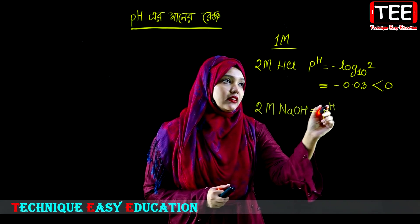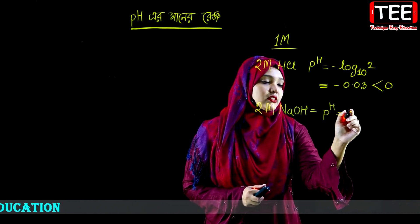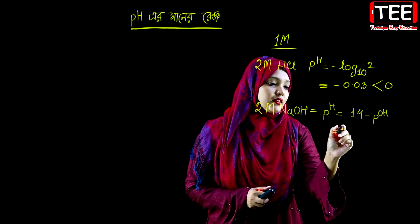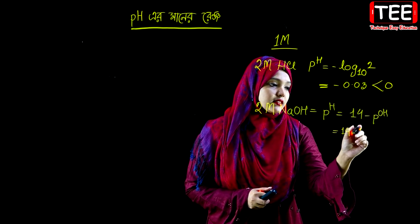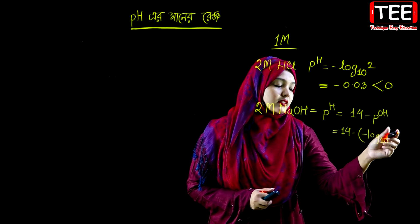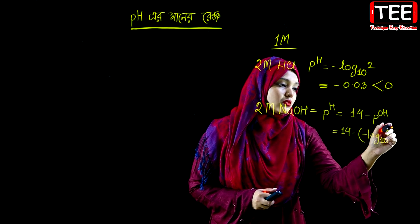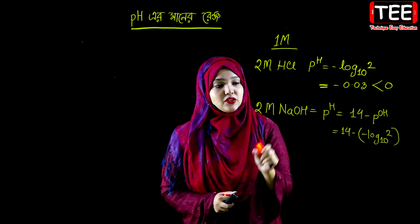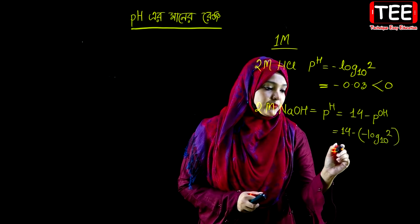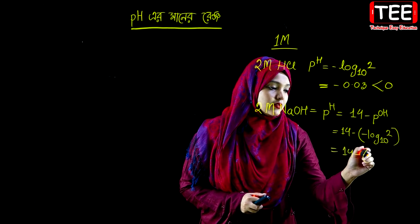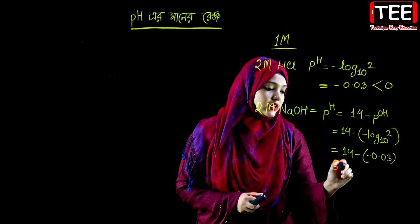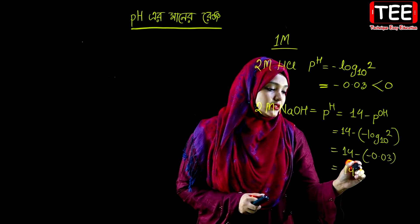pH is equal to 14 minus pOH, which equals 14 minus log base 10 of 2. For 2 molar sodium hydroxide, pH = 14 minus (minus 0.03), which equals 14.03. So pH is greater than 14.